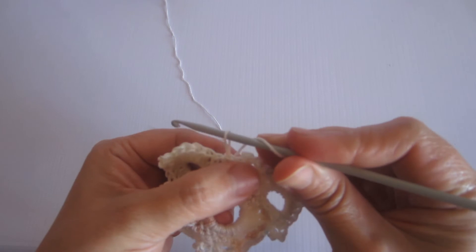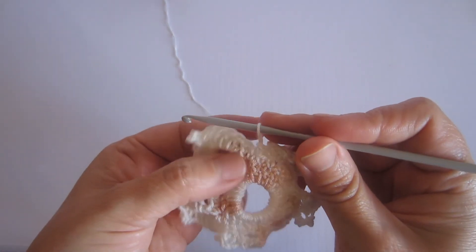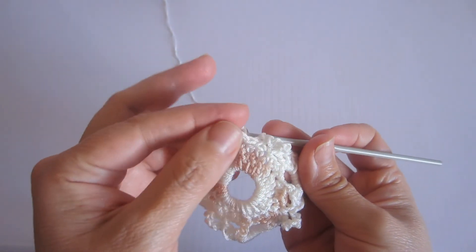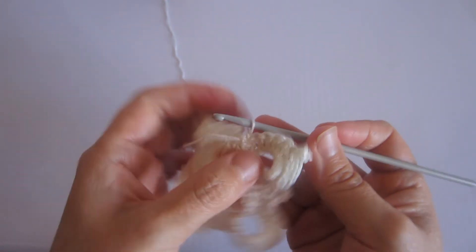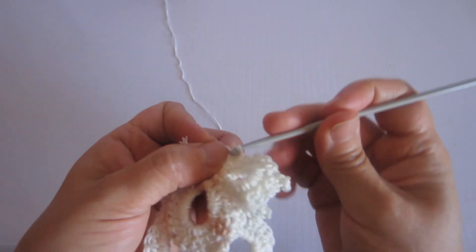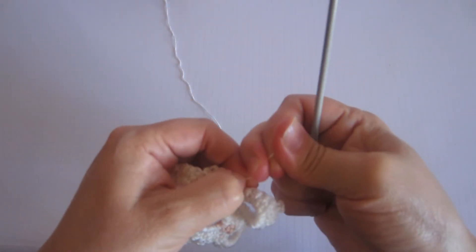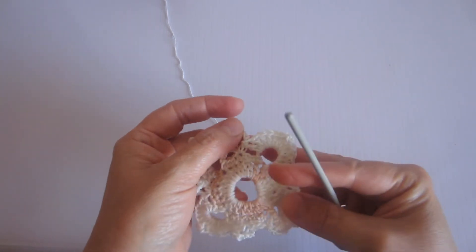Vamos a recortar. Y este punto que queda lo voy a pasar hacia atrás para que quede mejor el terminado. Ahí. Y remato. Y está listo mi granny. ¿Qué les pareció amigas? ¿Verdad? Que bien fácil. Y súper rapidito de tejer.